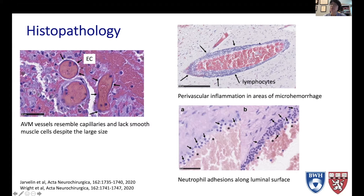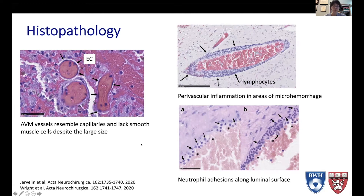Other things that differentiate AVM vessels from normal arteries and veins are inflammatory cells. In areas of microhemorrhages — and many AVMs do have areas of microhemorrhages, which is not the same thing as a ruptured AVM — there are small pockets of bleeding within the AVM even in an unruptured AVM. Lymphocytes gather around these areas, and within the lumen of the AVM vessels themselves, you can see many neutrophils that adhere to the luminal surface.